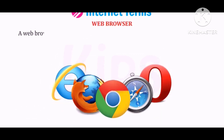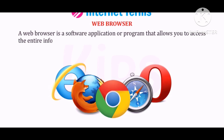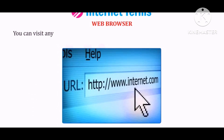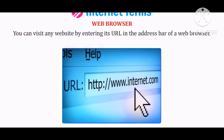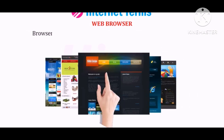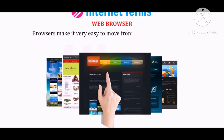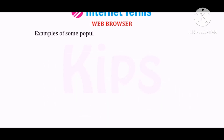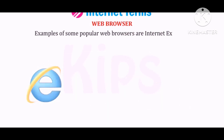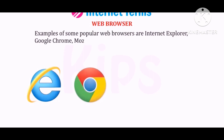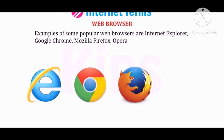Web browser: A web browser is a software application or program that allows you to access all the information available on the web. You can visit any website by entering its URL in the address bar of a web browser. Browsers make it very easy to move from one website to another. Examples of popular web browsers are Internet Explorer, Google Chrome, Mozilla Firefox, Opera, etc.